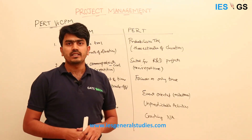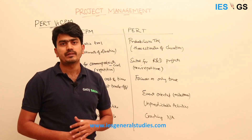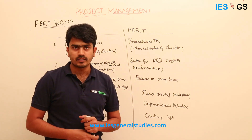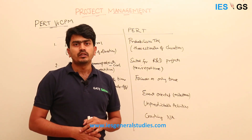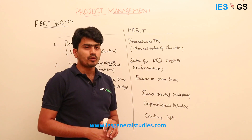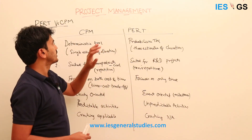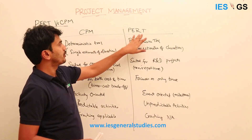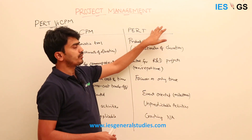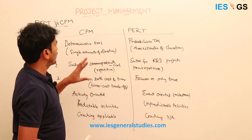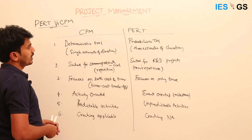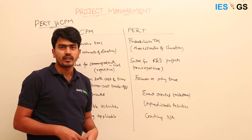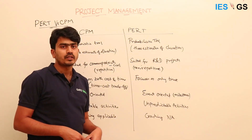In this video we can see the differences between CPM and PERT techniques on various parameters. The first difference: CPM is Critical Path Method whereas PERT is Program Evaluation Review Technique. Both are network-based techniques which came into existence around the same time in the 1950s.